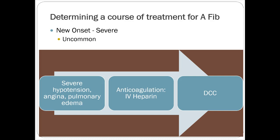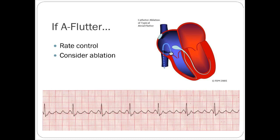Severe onset atrial fibrillation is unusual — most people are pretty stable when they come in with AFib. In a hemodynamically unstable patient, you anticoagulate with IV heparin as fast as possible, and since you may not have time to check for a clot, you proceed to electrical cardioversion. Atrial flutter is a similar process: you can convert people out with electricity, rate control is useful, and antiarrhythmic agents may be used occasionally, but ablation is generally the best intervention for atrial flutter. That concludes cardiology — see you Monday for the review session.